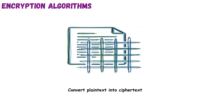Symmetric encryption uses one key for both encryption and decryption. Asymmetric uses public and private key pairs. The choice depends on speed, security, and application — think VPNs, SSL, or file encryption. Output from encryption looks like gibberish unless decrypted with the correct key.